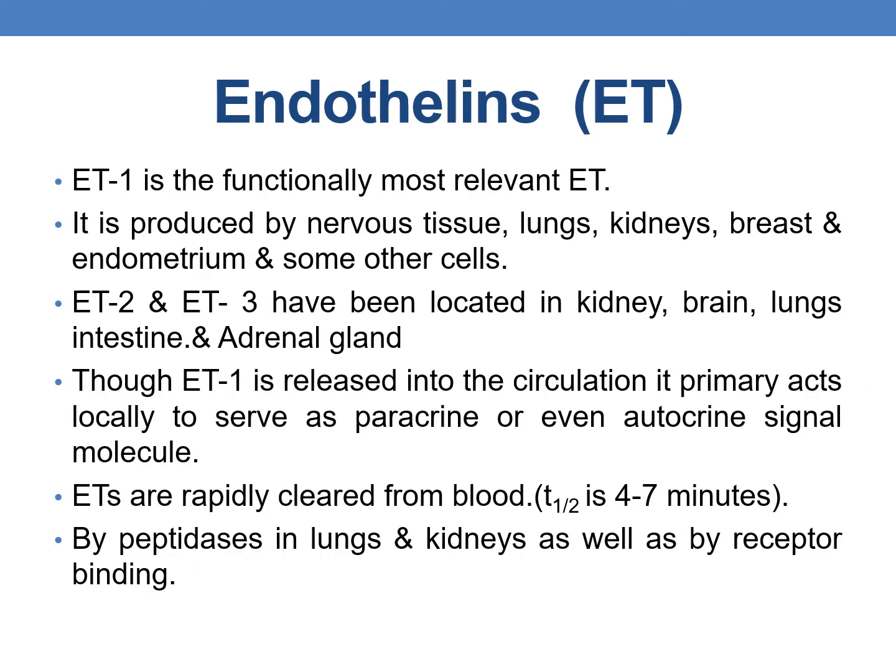ET1 is functionally the most relevant endothelin. It is produced by nervous tissue, lungs, kidneys, breast, endometrium, and other cells. Whereas ET2 and ET3 have been located in kidney, brain, lungs, intestine, and adrenal gland.